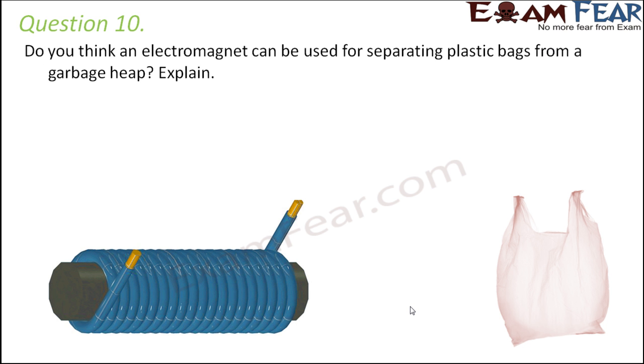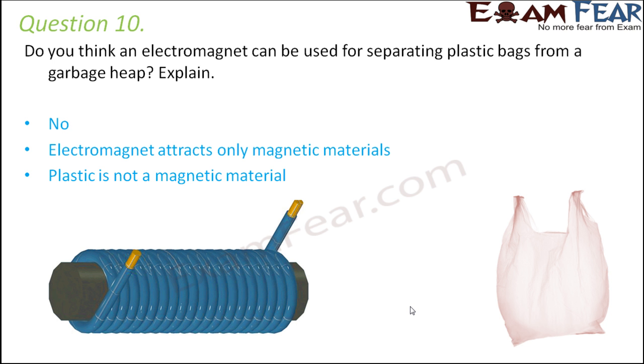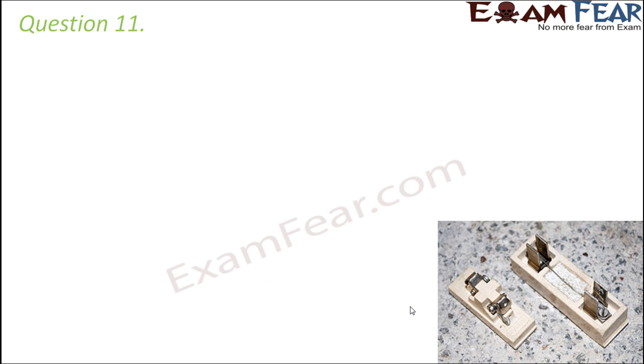Question number 10. Do you think an electromagnet can be used for separating plastic bags from a garbage heap? Not really because electromagnet is capable of attracting only magnetic materials. Plastic is not magnetic in nature. Plastic doesn't get attracted when a magnet is placed near it. Electromagnet would be useful only for separating ferromagnetic materials like iron. It is not going to help in case of plastic materials because it is not a magnetic material.